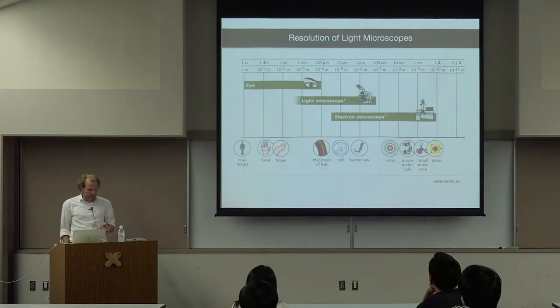The simplest microscope is just one lens. One of the earliest is the so-called Nimrud lens, a polished piece of glass found in Iraq — basically a magnifying lens with some impurities. It may have been used to overcome presbyopia, a form of farsightedness in older age.